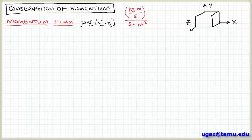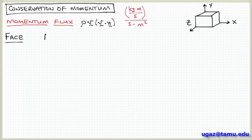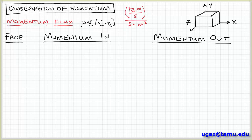We're going to apply it to our differential control volume shown here. To keep track of what we're doing, I'm going to make a table. In the first column I'll have the face of the cube that I'm talking about, and then in the next two columns I'll have the momentum inflow and outflow through those respective faces.